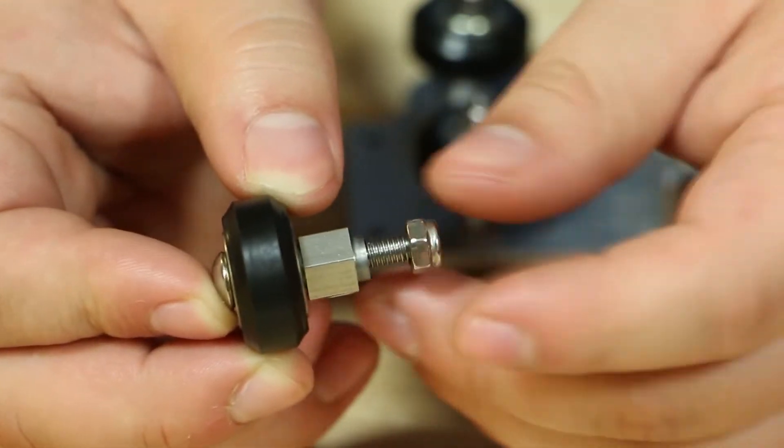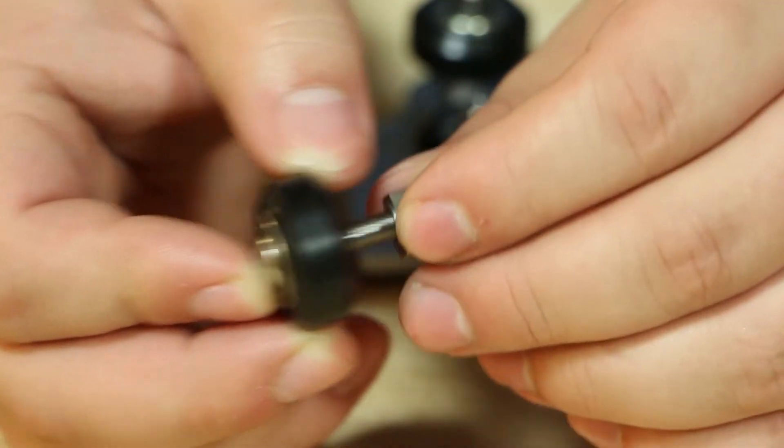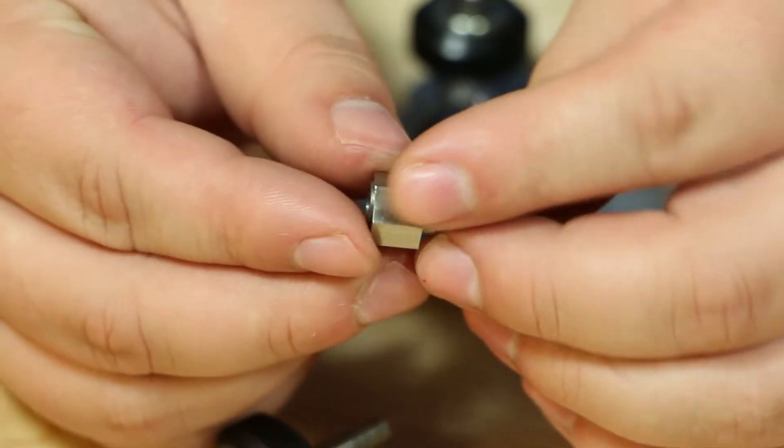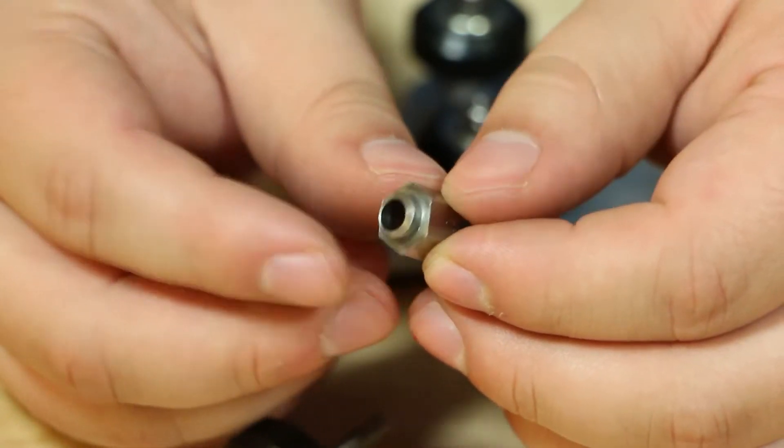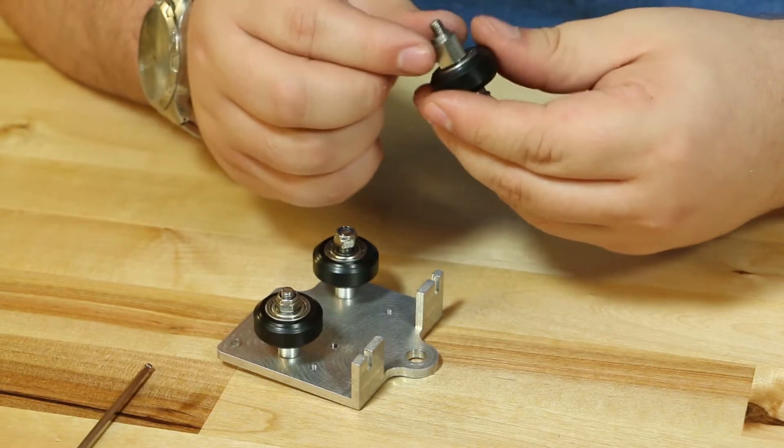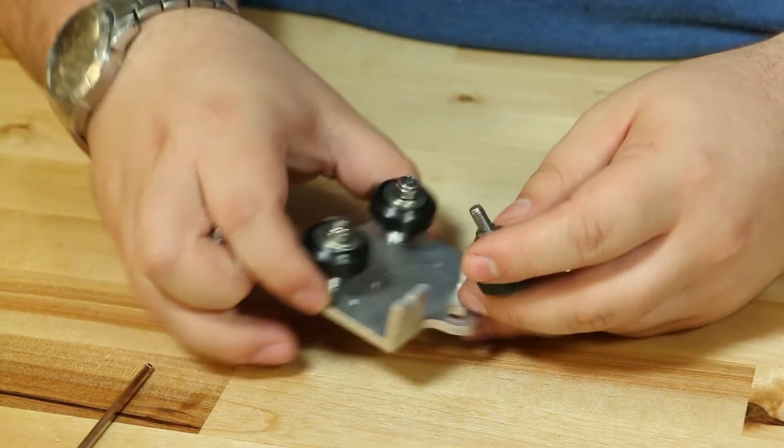The bottom wheel has something special about it. It has an eccentric nut. This allows it to tighten on to the bottom of the gantry. Attach the bottom wheel loosely so that you can slip it on the X-axis gantry.